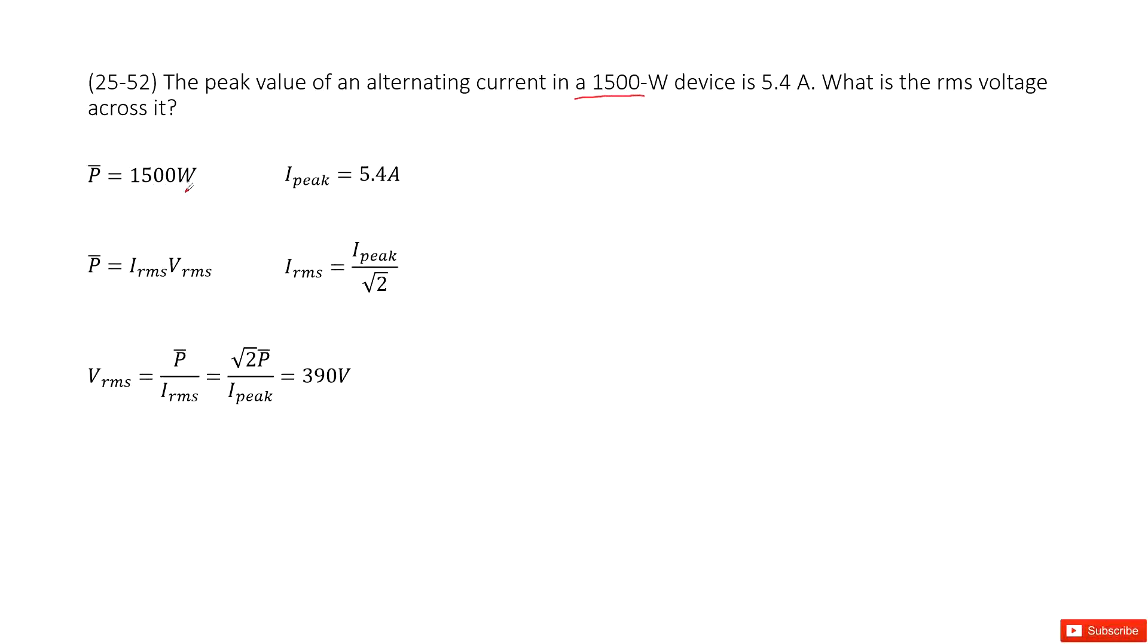So 1500 watt. We write it there and also the peak current is 5.4 amp. It asks you what is the RMS voltage across it.